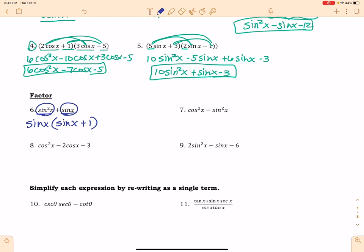And then this one right here, we have cosine squared x minus sine squared x. That is a difference of squares. So we factor it like we would any difference of squares. Cosine x, cosine x here. Sine x, sine x, positive, negative.